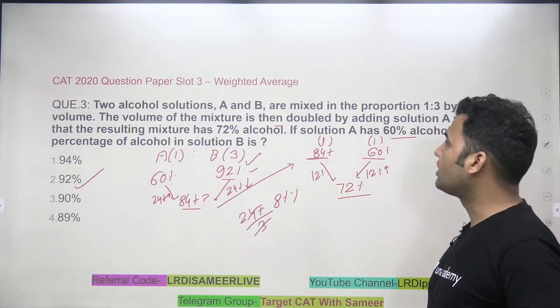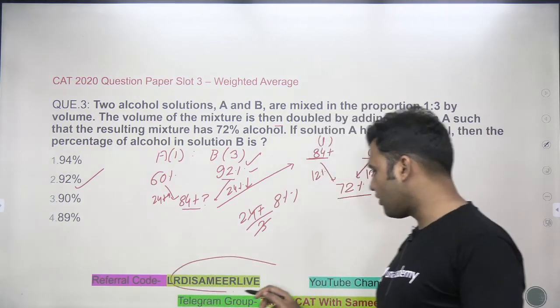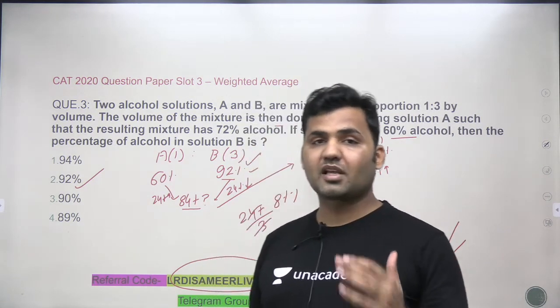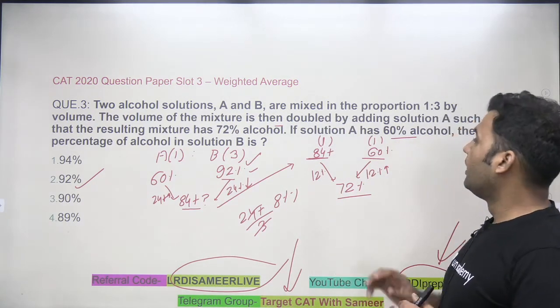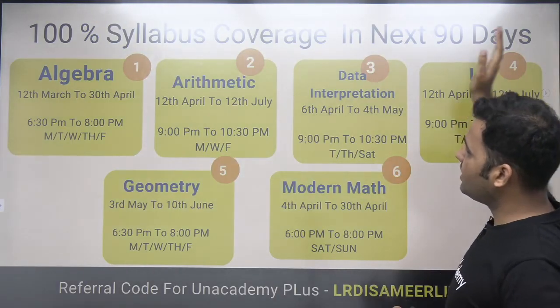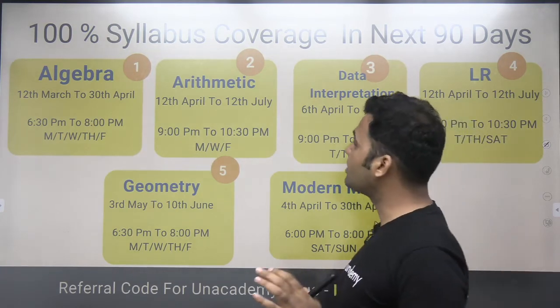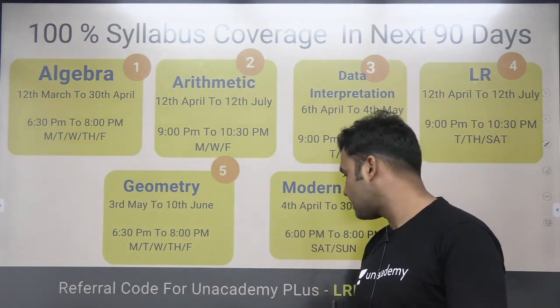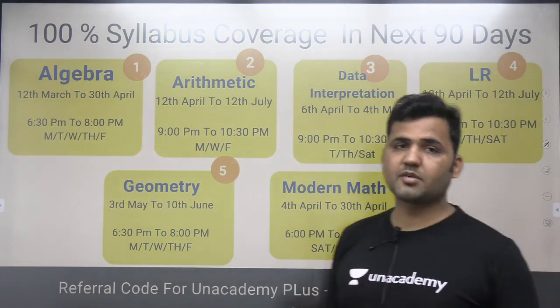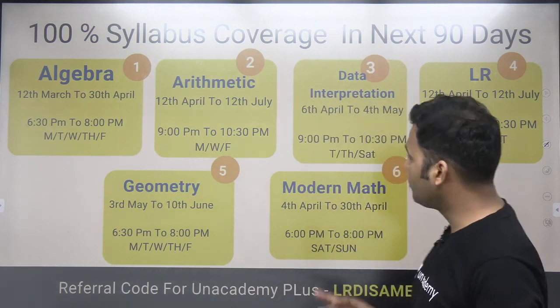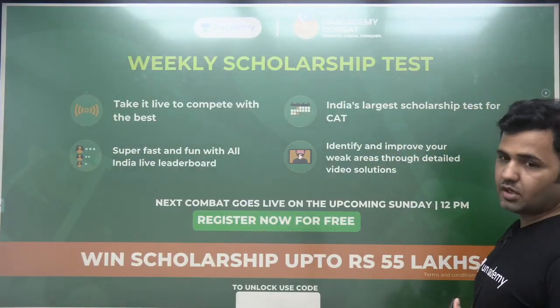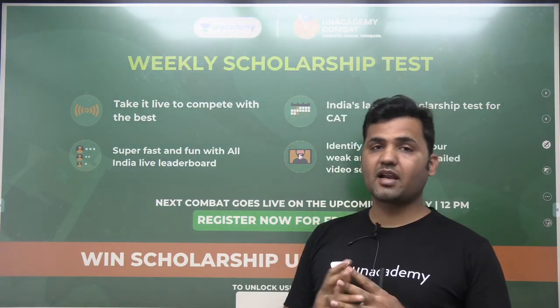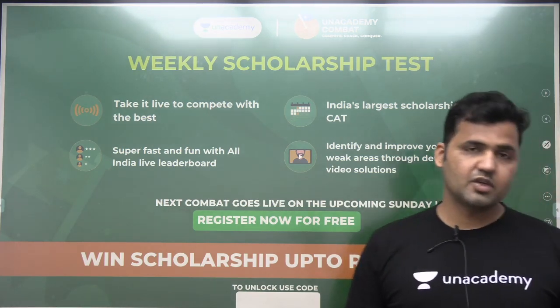Guys, this is my referral code, LRDSMEERLIVE for plus subscription. You need to subscribe to this YouTube channel to cover your syllabus. And this is my telegram group for free content and updates on my classes and videos. Target CAT with Smeer. And the rest of the questions will be discussed in the next part of the video guys. Thank you so much for joining the session. You can cover 100% syllabus on Unacademy plus by joining my courses: Algebra, Arithmetic, Data Interpretation, LR, Geometry, Modern Math. These are the courses which I'll be running in the next 90 days on Unacademy plus. So use my referral code, LRDSMEERLIVE. There's a weekly scholarship test coming up on next Sunday at 12pm. You can register yourself for this test. You can unlock this test by using my referral code and you can stand a chance to win scholarship up to Rs 55 lakh. Thank you so much for watching the video. See you in the next part.